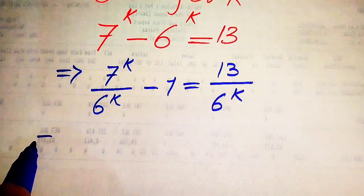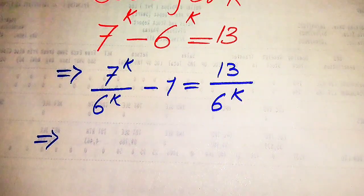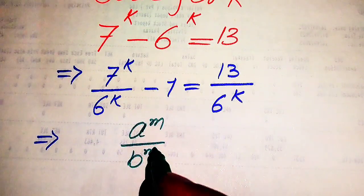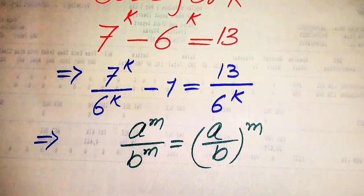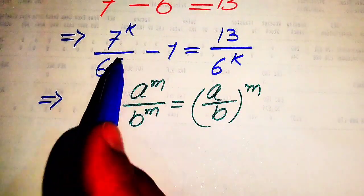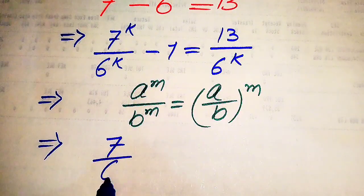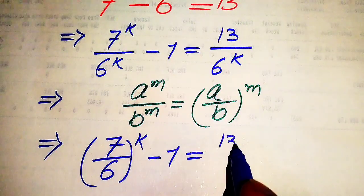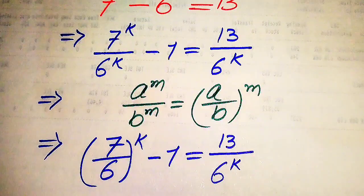Now we apply the exponential rule: a^m divided by b^m equals (a/b)^m. We combine the exponents of the first term, so it becomes (7/6)^k minus 1 equals 13 divided by 6^k.